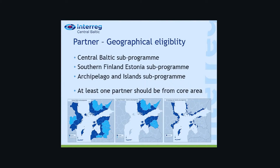The Southern Finland and Estonia sub-program covers projects where partners are only from Estonia and Finland. The dark blue is the core area and the lighter blue is the additional area, meaning at least one project partner must be from the core area. Other partners can be from the additional area, but main activities should be targeted in the core area.